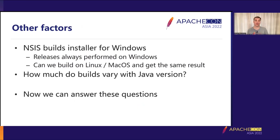There were also other factors the Tomcat project took into account. The first is the Windows installer, built using the NSIS tool. We always build that on Windows, which means releases always had to be done on Windows. Whilst we know we can build the installer on Linux with Wine, we can't be certain the result is the same — there's no assurance that some weird bug isn't impacting the build. With cross-platform reproducible builds, we can confirm the Linux build produces the same thing as the Windows build, giving us the opportunity to build on different platforms.